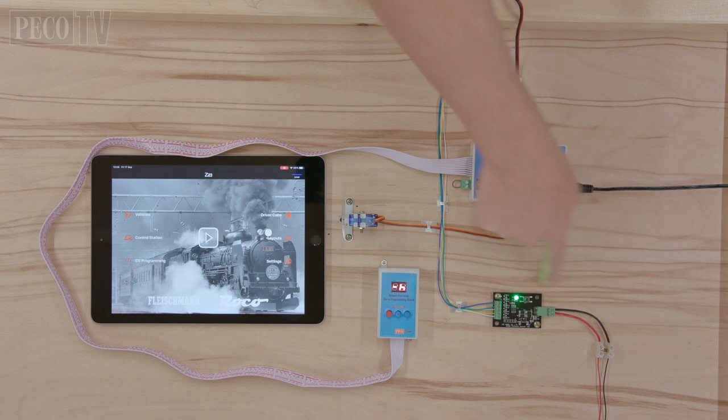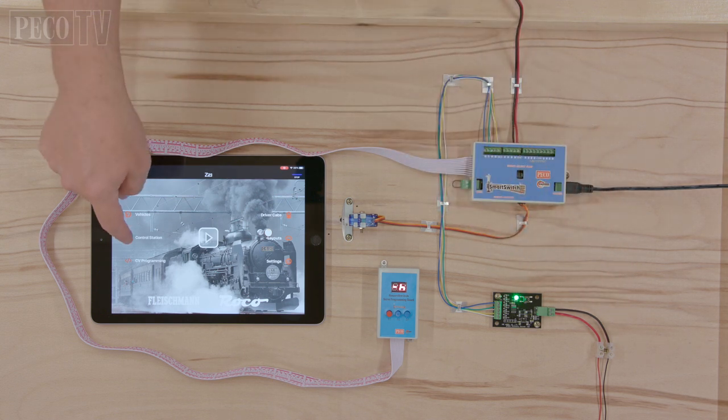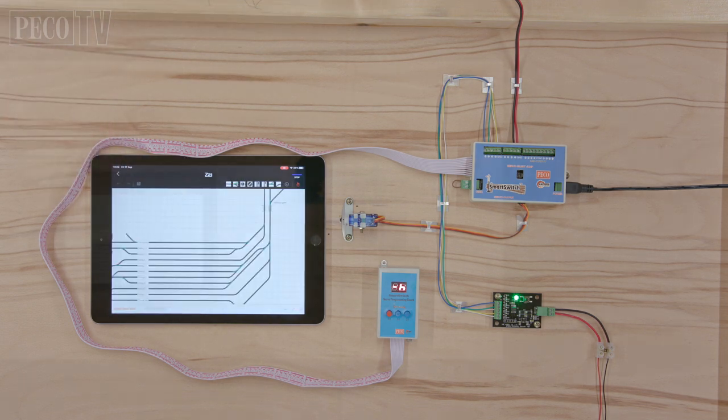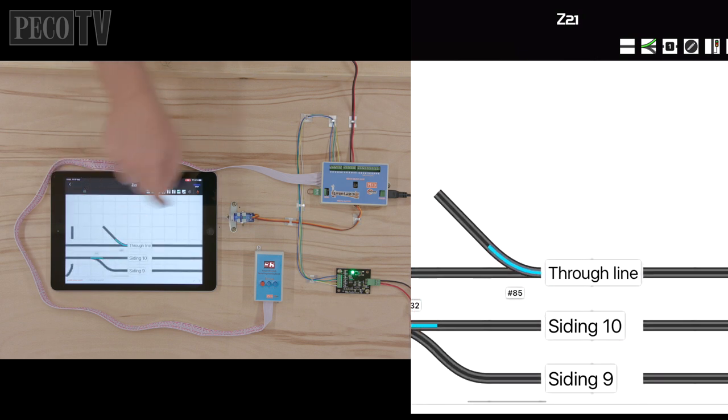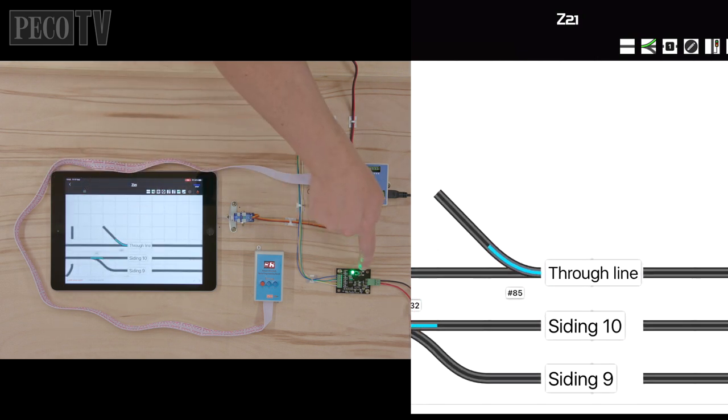We turn on the control station and the smart switch along with the stationary decoder. Then we enter the accessory address mode on the DCC controller and key in the number you would like for the address of the four servos.